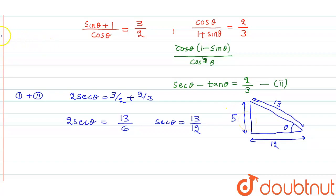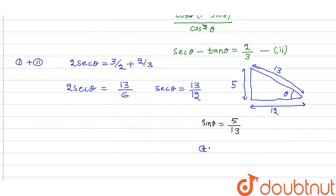So if you find sin θ, then sin θ can be given as height upon hypotenuse, that means sin θ is 5 upon 13. And tan θ can be given as height upon base, that means 5 upon 12. So this is our answer. Thank you.